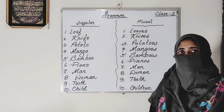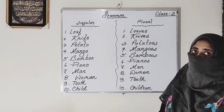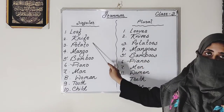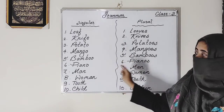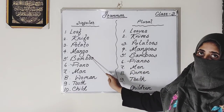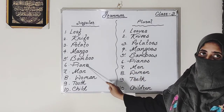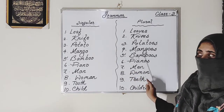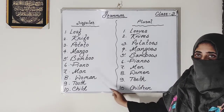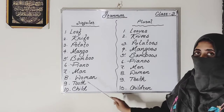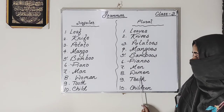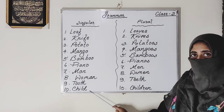Ok dear student, read once more with me. Leaf — leaves. Knife — knives. Potato — potatoes. Mango — mangoes. Bamboo — bamboos. Piano — pianos. Man — men. Woman — women. Tooth — teeth. Child — children.